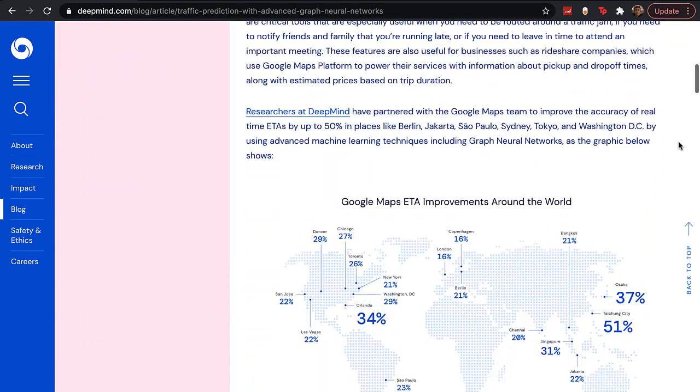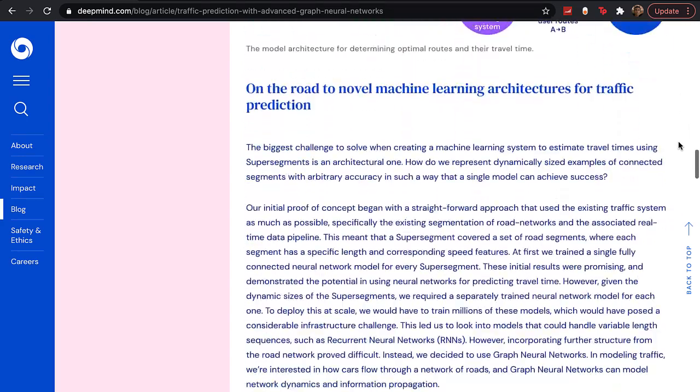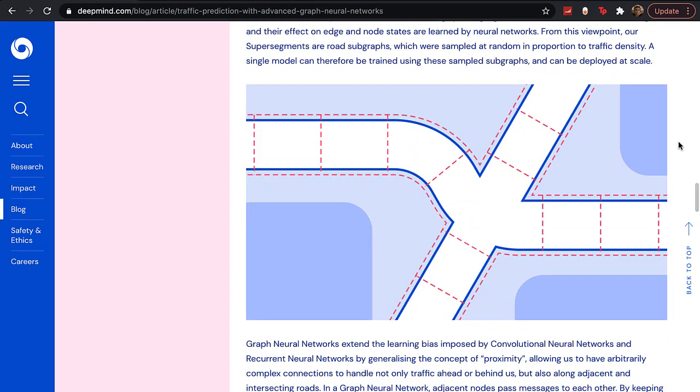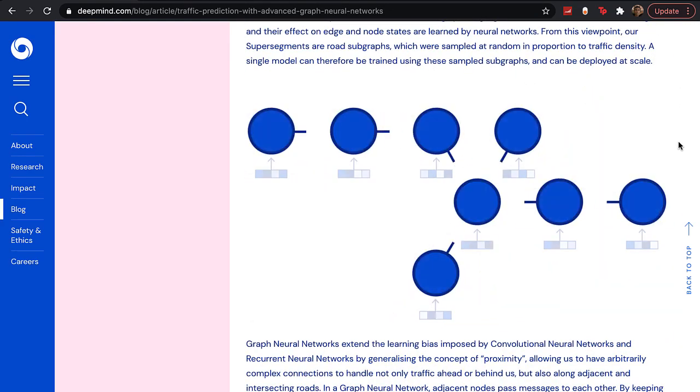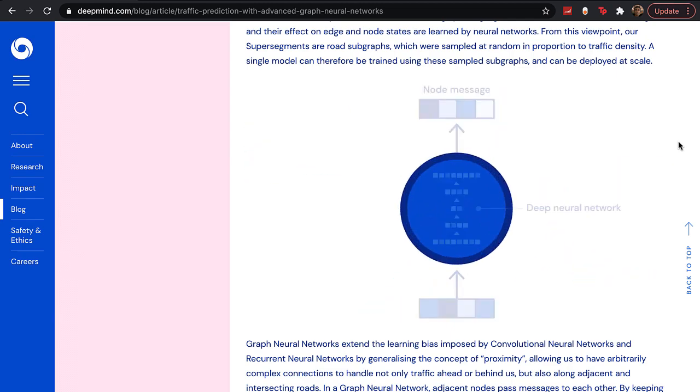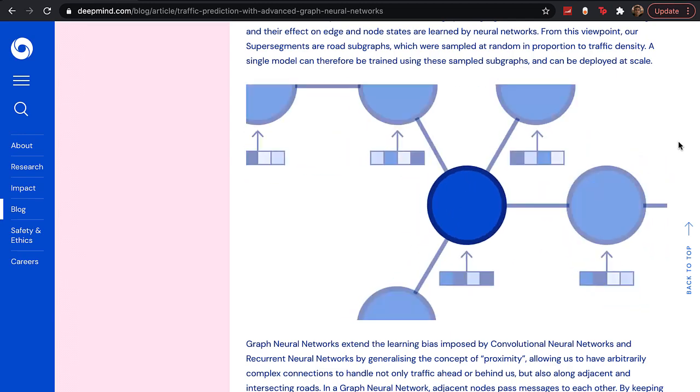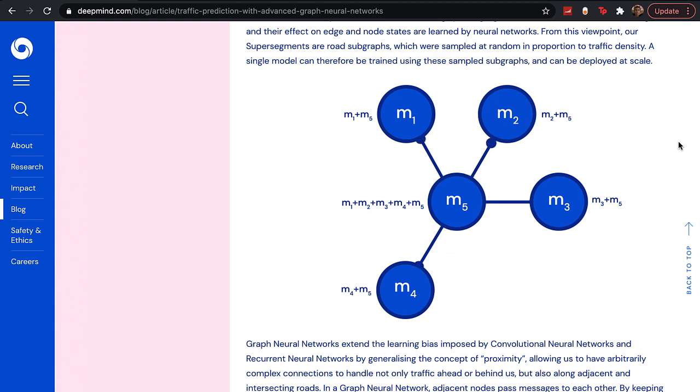In order to get more accurate time estimates, we can further divide these road segments into smaller segments. Typically, this isn't feasible since the computation power increases by several fold on doing so. But it's Google, they can do it, and they mostly do. And it's because of this that their ETAs are pretty stellar and on point.